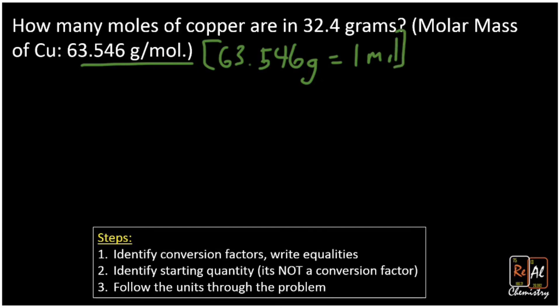All right, now we're ready to go ahead and start the conversion problem. We want to identify the starting quantity. So we've done step one. Step two is identify the starting quantity. There's only one other number in this problem. So it's pretty easy to realize we should start there. So we're going to start with 34.2 grams.